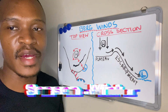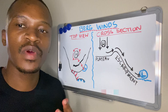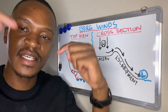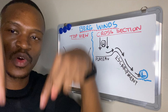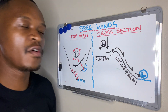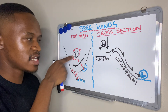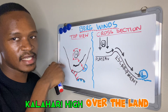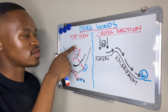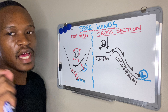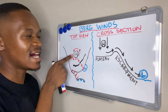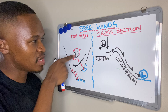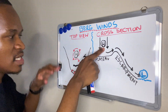In winter, the air sinks, subsides, or descends, forming a high pressure over the land. We have a dominant high pressure over the land in winter. This high pressure is known as the Kalahari High or the continental high.